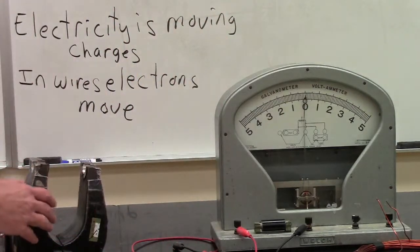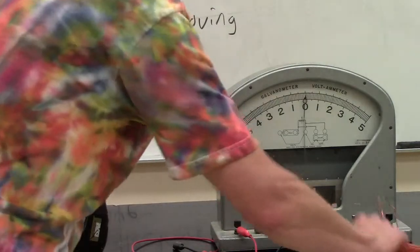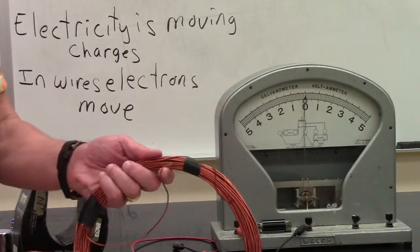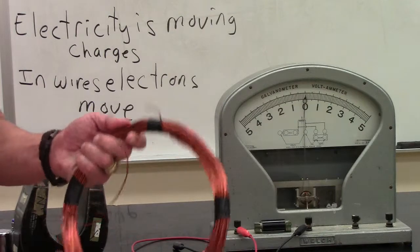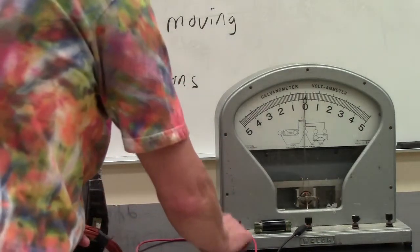What I have here is a big magnet, and here, I have insulated copper wire that's coiled up in a circle, as you can see, and I'm going to hook it up to my galvanometer.